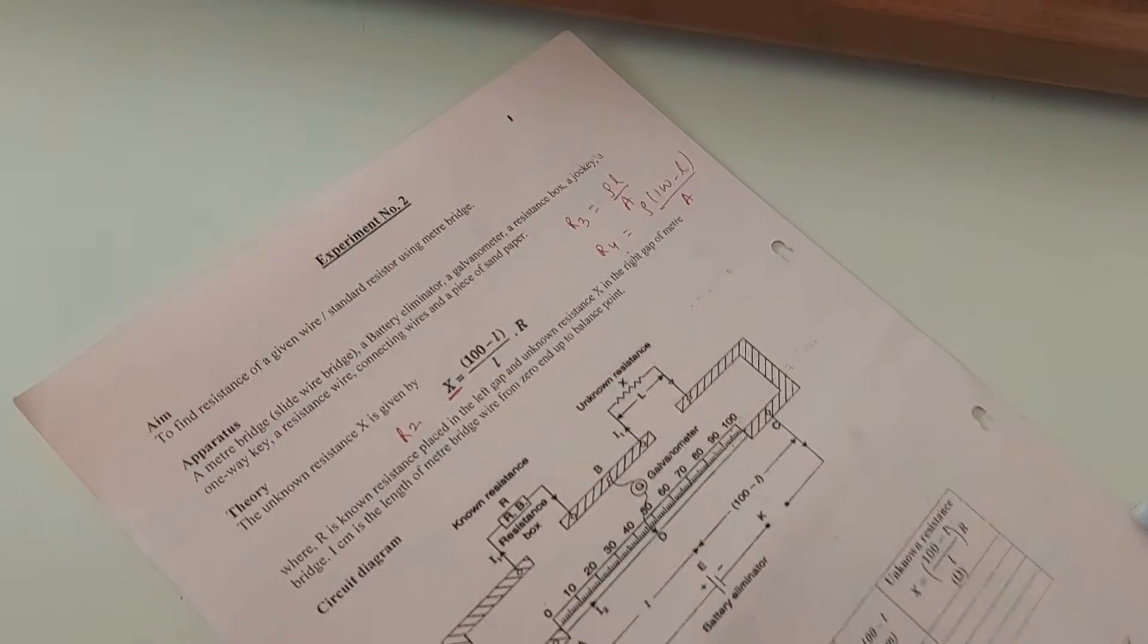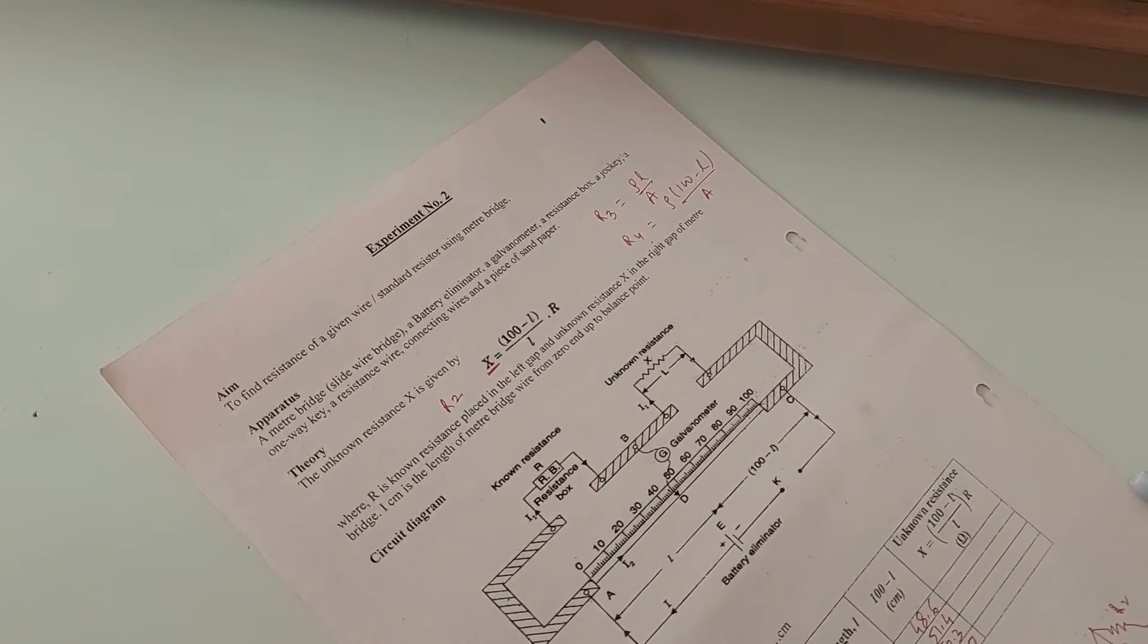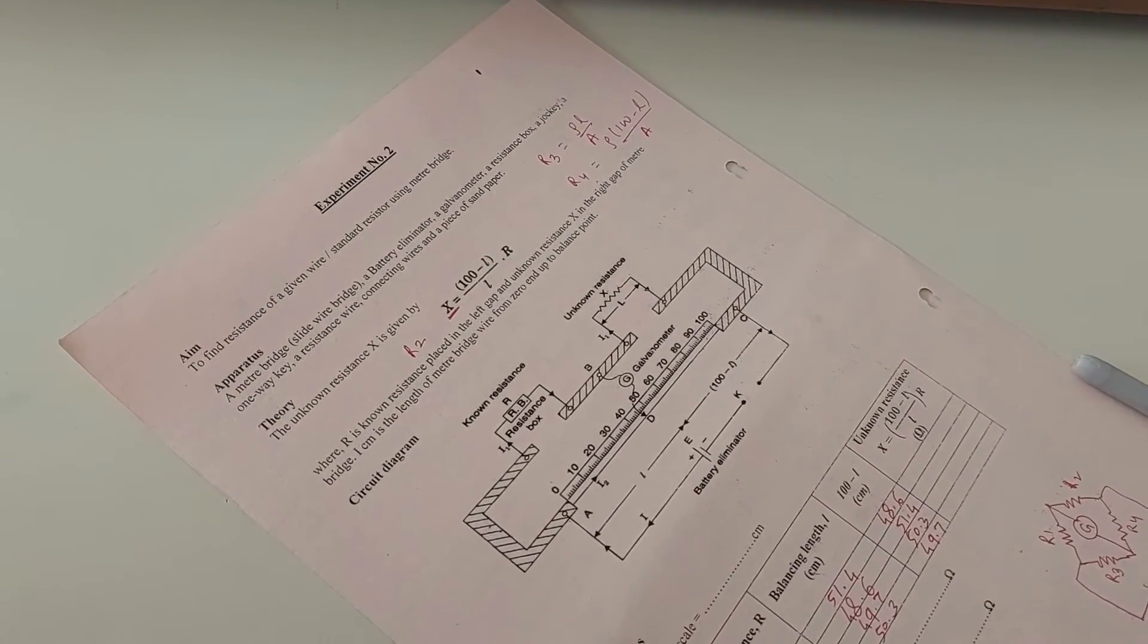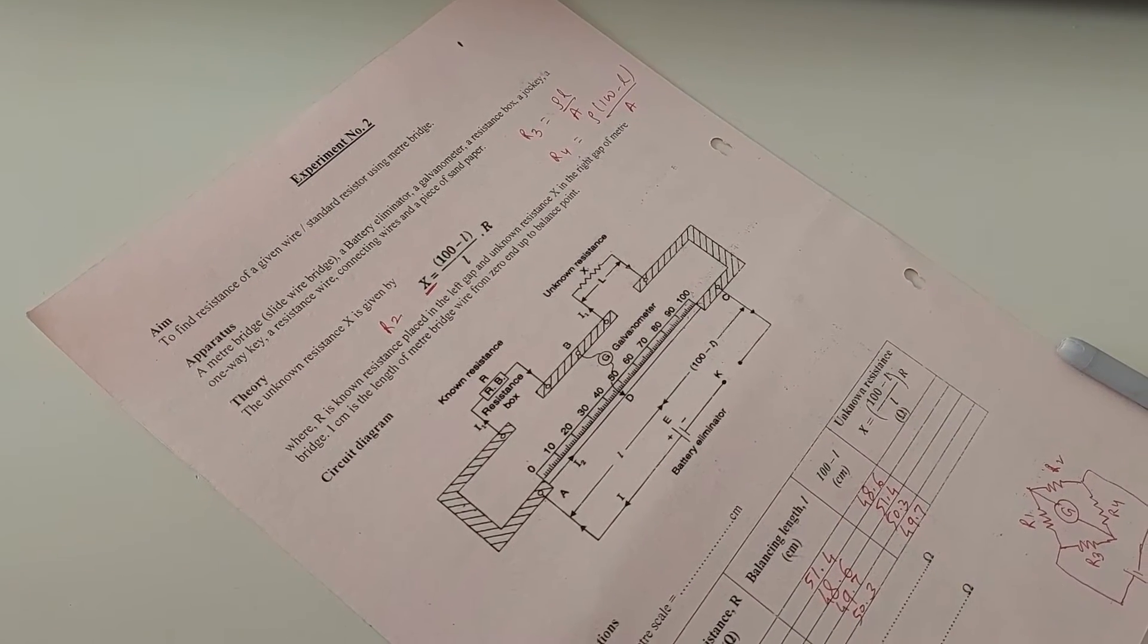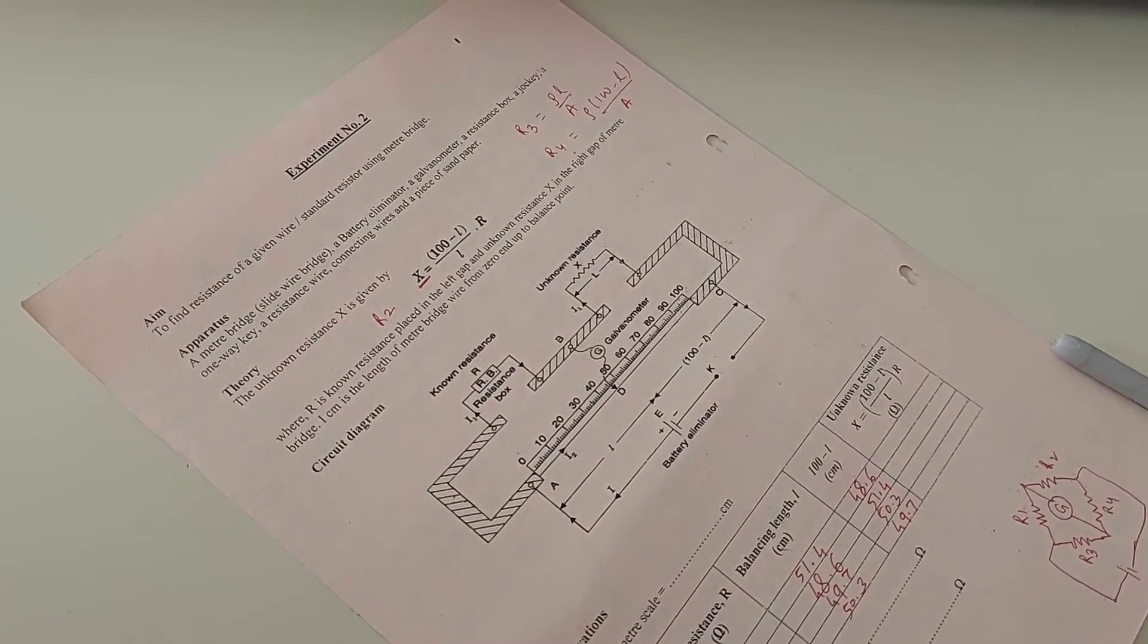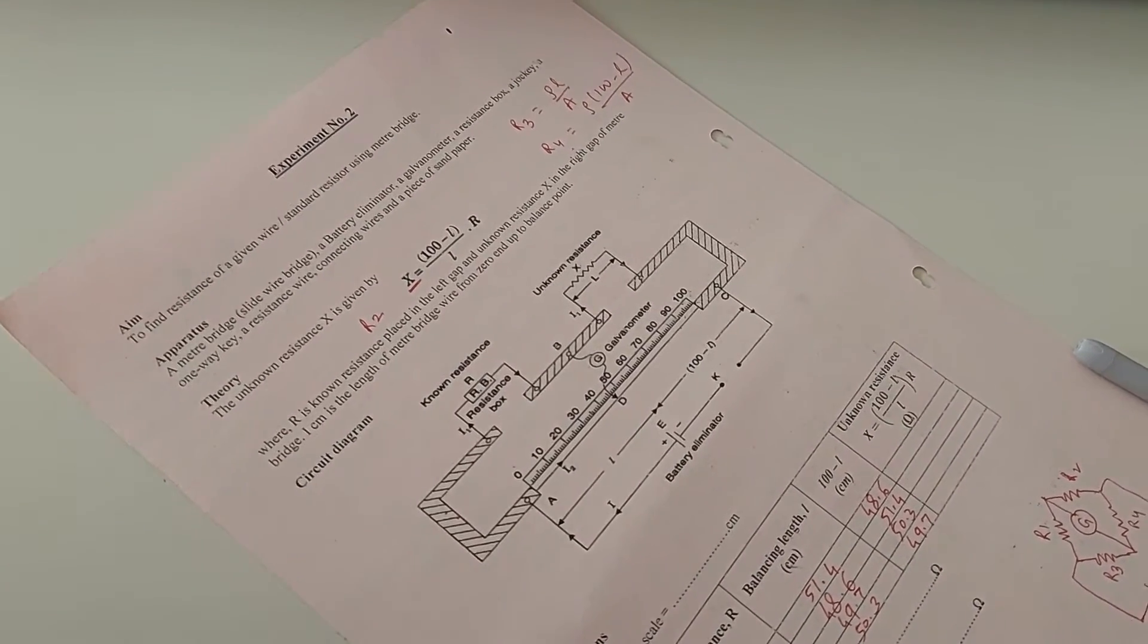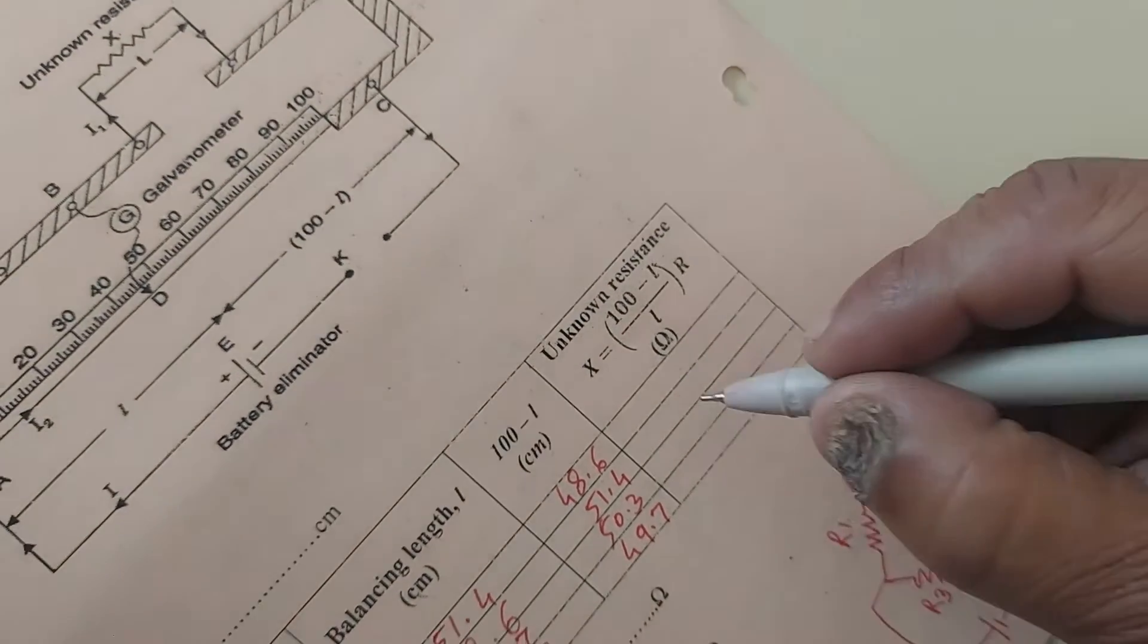Now we will demonstrate one calculation to you to find the unknown resistance and the rest follow the same. You have to use this formula, 100 minus L into R upon L.